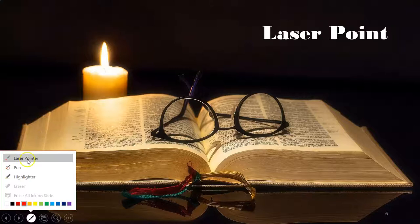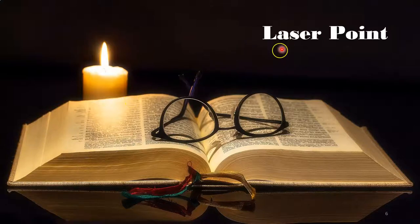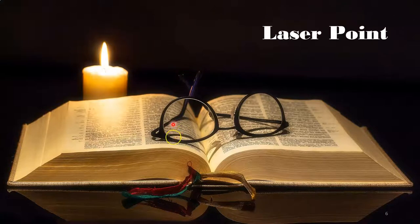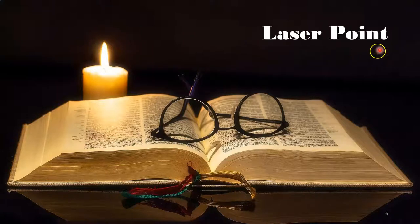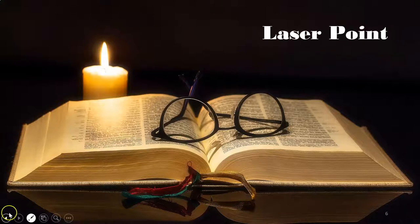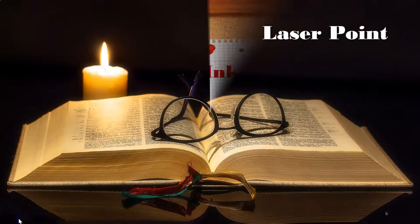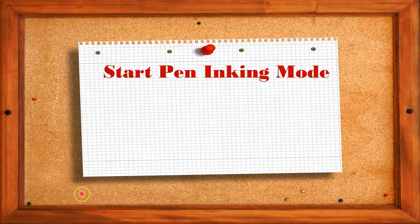I am selecting the Laser Pointer and highlighting an area on screen. This is for pointing out important points — for example, I can highlight a specific word like 'candle' using the laser pointer. I hope you understand how to use the laser pointer. Now I'll move to the next feature: how to use the pen to write on the slides.